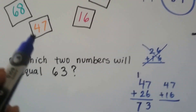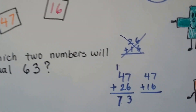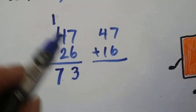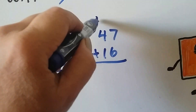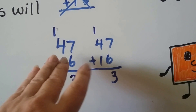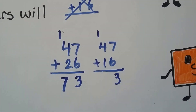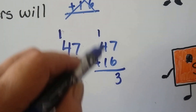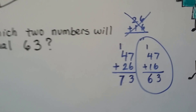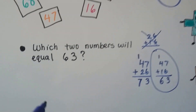So let's try adding the 47 and the 16. We already know that 6 plus 7 is 13 — we did it right here. We regrouped the 1 and put the 3 down. It's the same thing. So we can start the ones the same way — it's a 13. Now we can add the tens place: 4, 5, 6. And we see it does equal 63. So the two numbers that we can add together that will equal 63 would be the 47 and the 16.